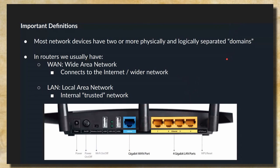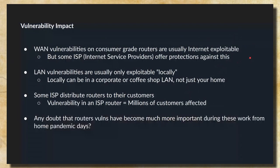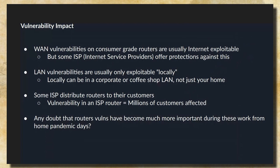Most network devices, whether enterprise or home, have this kind of separation into different networks. Enterprise ones can have many more than two — sometimes 10 or 20. In terms of impact, WAN-side or external vulnerabilities are usually internet-exploitable on consumer-grade routers, although some ISPs offer protections. The same applies to enterprise network equipment — whatever is exposed on the outside network can usually be exploited from that side. LAN vulnerabilities are only usually exploitable locally.